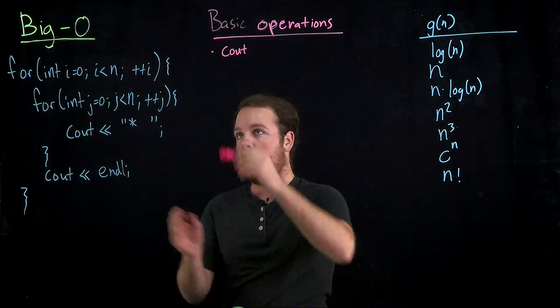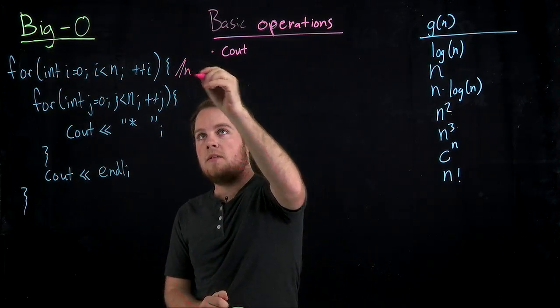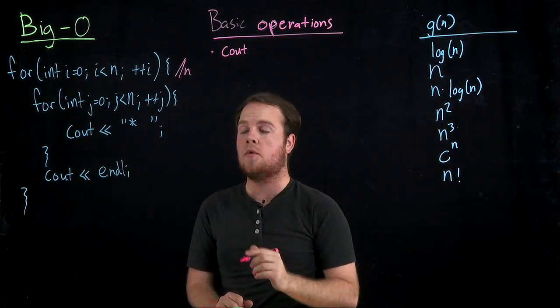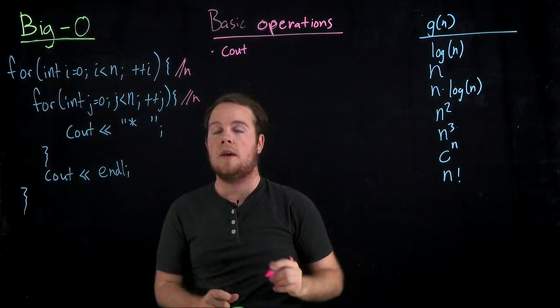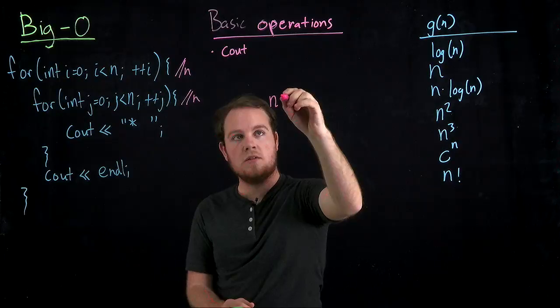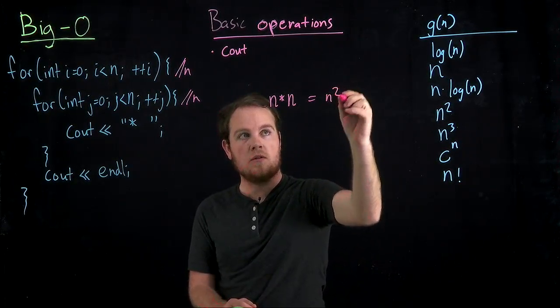So let's take a look. So we have this outer for loop will execute n times. And this inner for loop, for every execution of the outer for loop, will also execute n times. And so because they're nested in that way, our efficiency is going to be n times n, which is n squared.